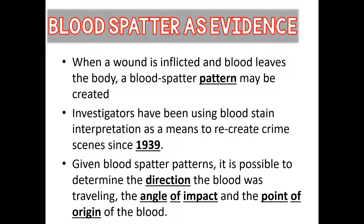Blood stain analysis is different from any of the other types of evidence we've talked about so far. Fingerprints, DNA, fibers, hair — those pieces of evidence try to point to a person and narrow down the suspect field. Blood stain interpretation is going to help tell the story behind what took place at a crime scene. It does take a trained investigator, but it is very helpful to a crime scene investigation.